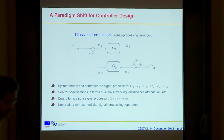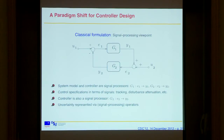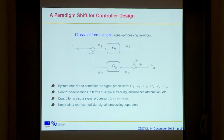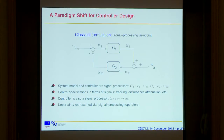This is the classical controller paradigm that we see in old textbooks, and it's a signal processing viewpoint. You have systems which are signal processors — inputs are identified, outputs are identified — and you have specifications also given in terms of signals. You want to track signals, you want to reject disturbances. And you're looking for another signal processor, which we call the controller, that you feed information into and then design a control signal. So this is really all signal processing.